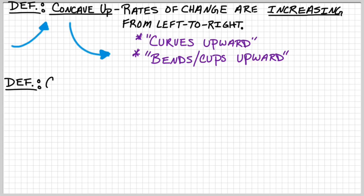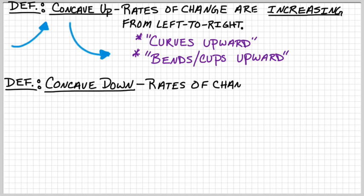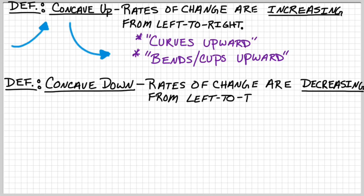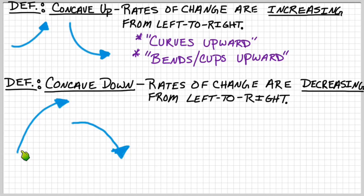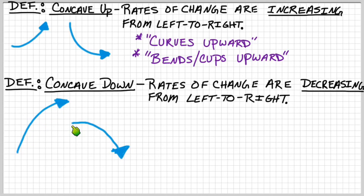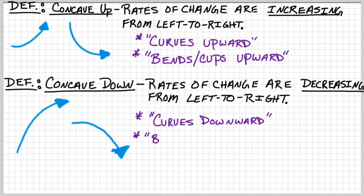So what about concave down? The definition: the rates of change would just be decreasing from left to right. This one — it starts out increasing, but then it stops increasing so much, flattens out, stops increasing. So it's actually decreasing — it starts out going really strong, then not so strong, not so strong, so the rates of change on this graph will be decreasing. That's why it's concave down. And for the other one, the rates of change really just start decreasing because this is a decreasing graph. Same thought — you could say it curves downward, or it bends or cups downward.